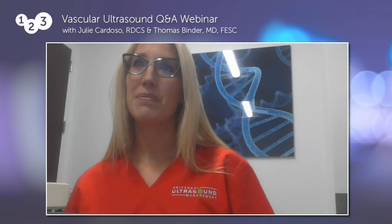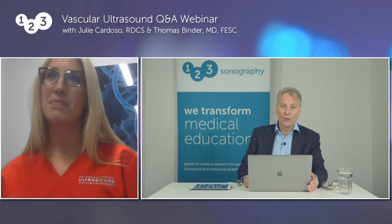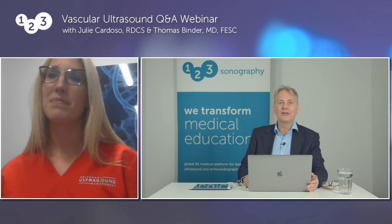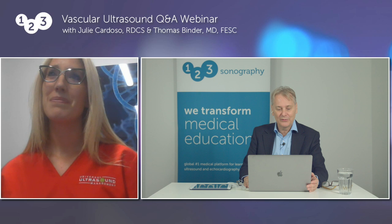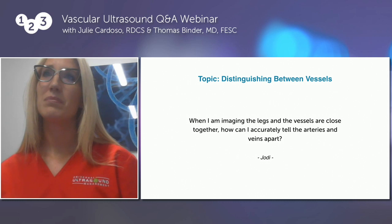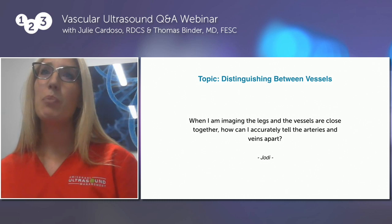Julie has been producing content with us. We have a course on peripheral vascular disease of the lower extremities now online and we're working on more courses. We'll start with the very first question, which covers distinguishing between vessels: when imaging the legs and vessels are close together, how can I accurately tell the arteries and veins apart? This was posted by Jody. Julie, what is the answer?